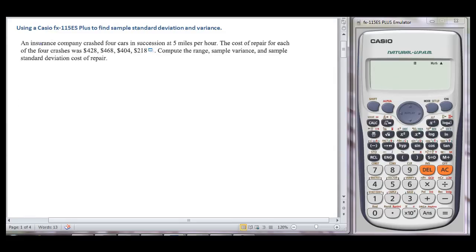An insurance company crashed four cars in succession at five miles per hour. The cost of repair for each of the four crashes was $428, $468, $404, $218. Compute the range, sample variance, and sample standard deviation of cost of repair.